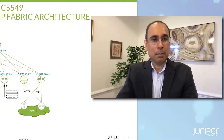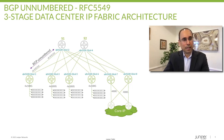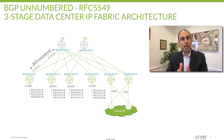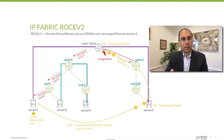Thanks for joining me for the last session on the DC architectures. In the first session, we discussed the BGP unnumbered standard specified in RFC 5549 becoming increasingly popular in the data center IP fabric ecosystem, how it compares to EBGP and how it is easier to enable compared to the IGPs. In the second session, we discussed Rocky V2 for boosting data center efficiency and data delivery performance.